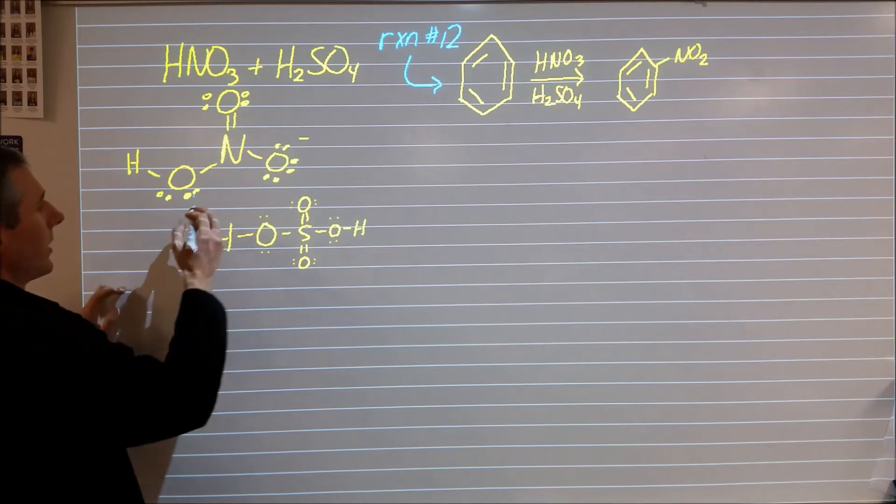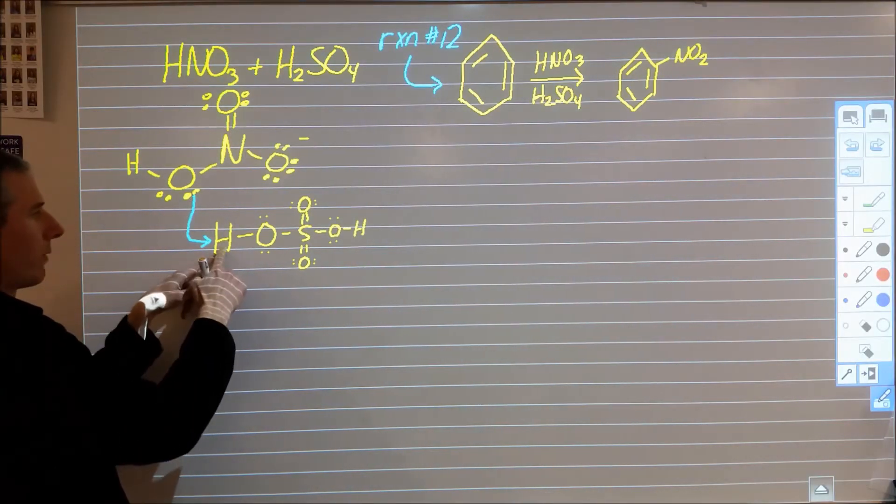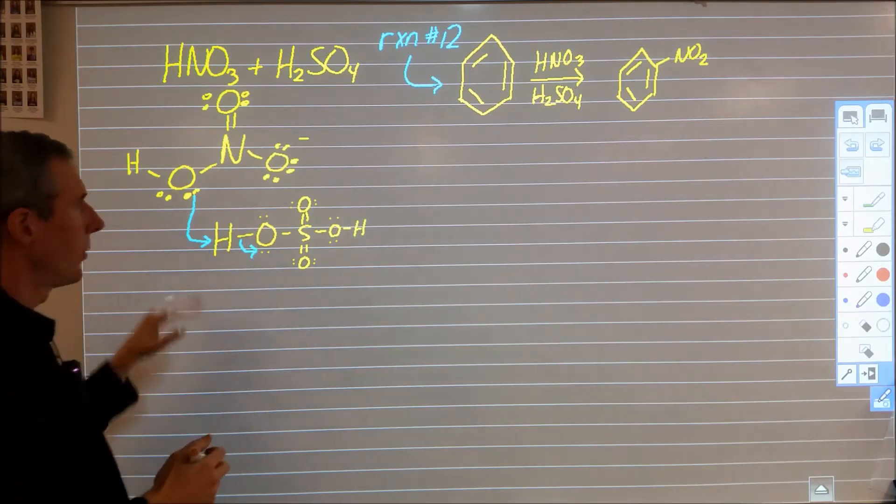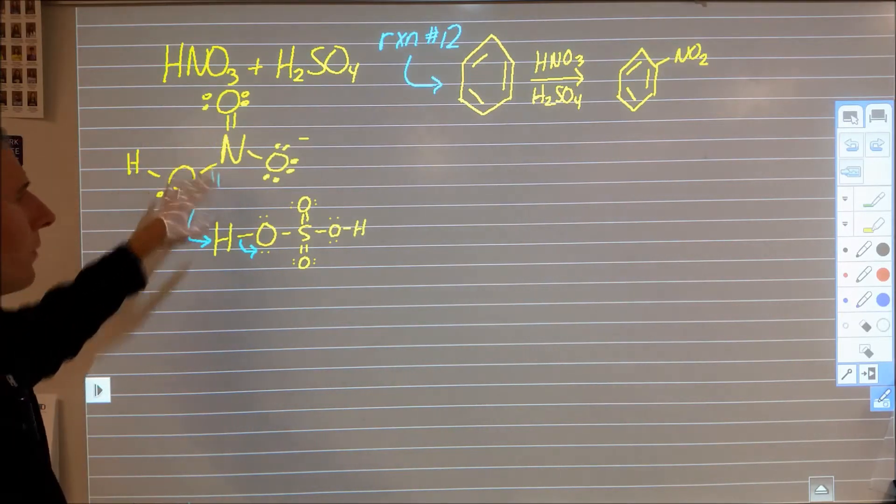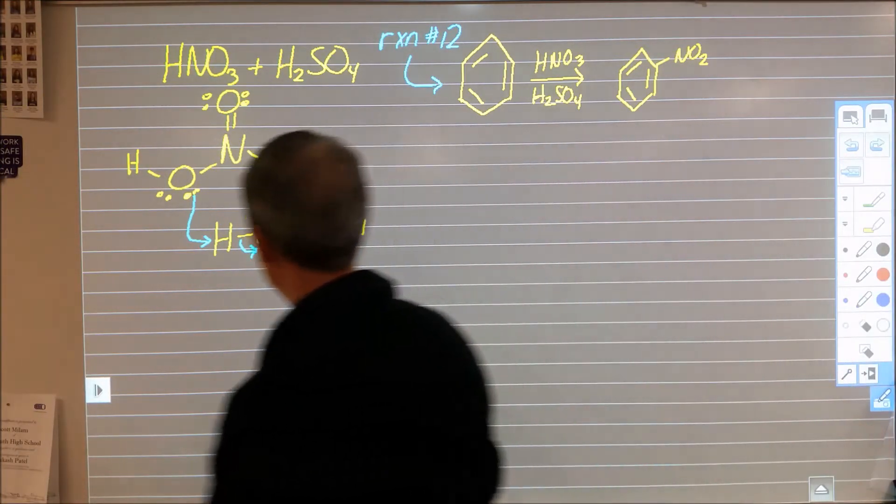What's unique about the sulfuric acid is it's a strong enough acid to actually cause the nitric to add the proton from here to here, sometimes, and when that happens we can form a second compound. Let's go ahead and look at how that will form that second compound.